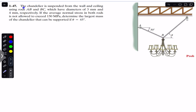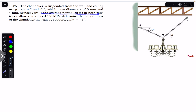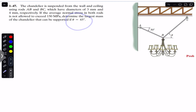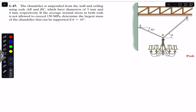We are going to solve this problem which says that the chandelier is suspended from the wall and ceiling using rods AB and BC, which have diameters of 3 mm and 4 mm respectively. If the average normal stress in both rods is not allowed to exceed 150 MPa, determine the largest mass of the chandelier that can be supported if theta equals 45 degrees.